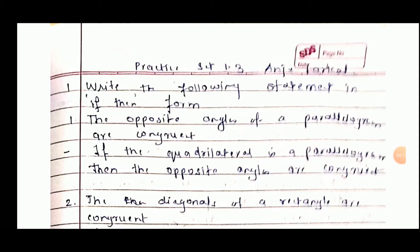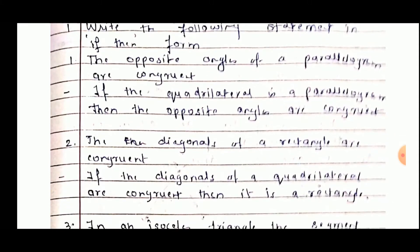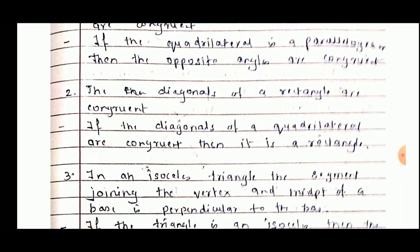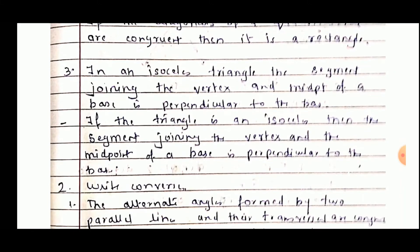Now see practice set 1.3: write the following statements in if-then form. First: opposite angles of a parallelogram are congruent — if a quadrilateral is a parallelogram, then the opposite angles are congruent. Second: the diagonals of a rectangle are congruent — if the diagonals of a quadrilateral are congruent, then it is a rectangle. Third: in an isosceles triangle, the segment joining the vertex and the midpoint of the base is perpendicular to the base — if the triangle is isosceles, then the segment joining the vertex and the midpoint of the base is perpendicular to the base.